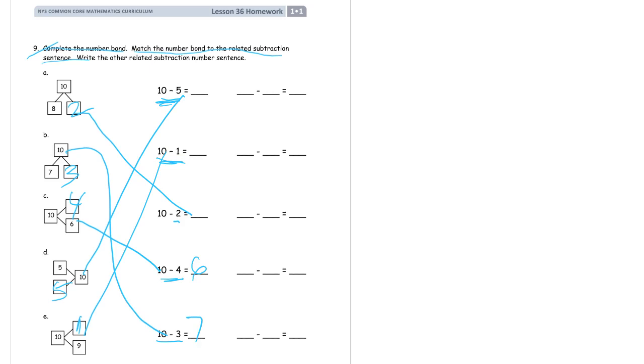So we'll just finish filling these in. 10 minus 5 is 5. 10 minus 1 is 9. 10 minus 2 is 8. That's in the number bonds. Your partners to 10.